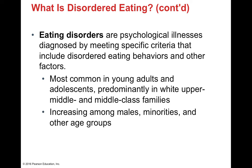Eating disorders are typically psychological illnesses — not just choices that individuals make. They are very common in young adults and adolescents, particularly in upper-middle-class and middle-class families. However, disordered eating behaviors are also increasing among at-risk groups such as males, minorities, and other age groups. While it was typically thought of as affecting females in white upper-middle-class families, it really can strike anywhere — any sex, any race, and any age group.